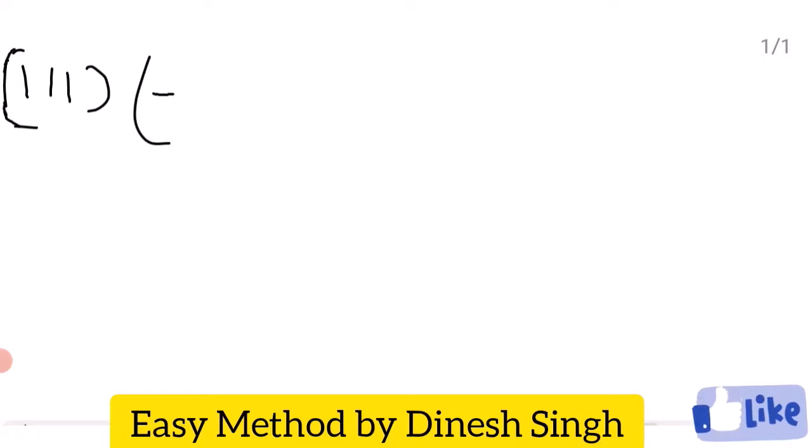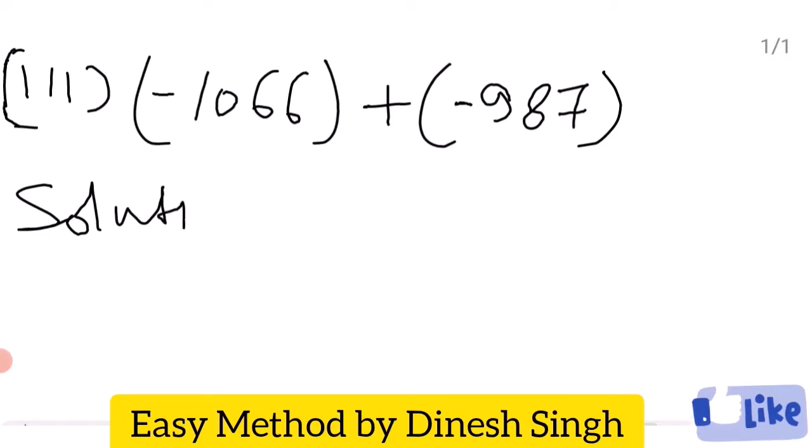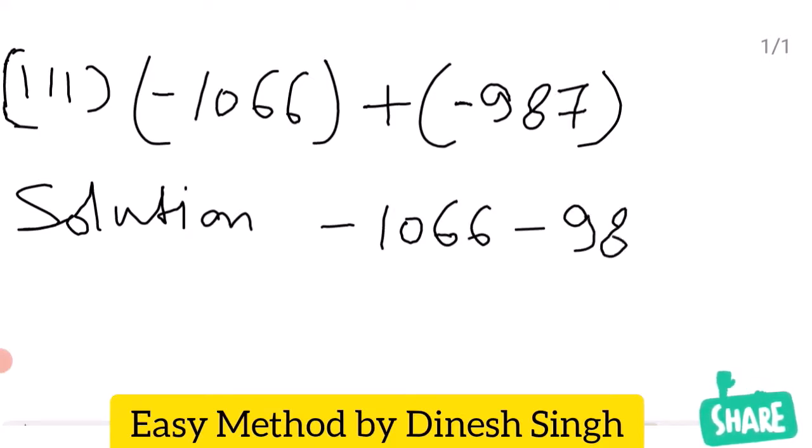Third: bracket minus 1066 plus bracket minus 987. Solution: minus 1066 plus minus 987. Both integers are negative, so the answer will be negative.